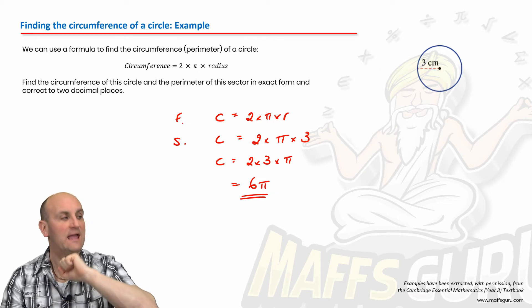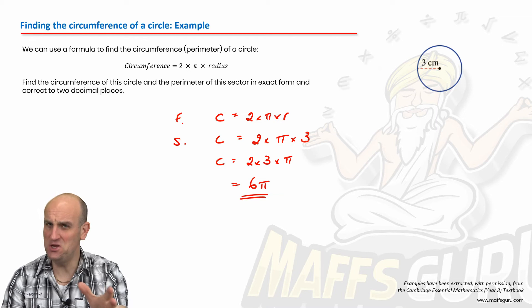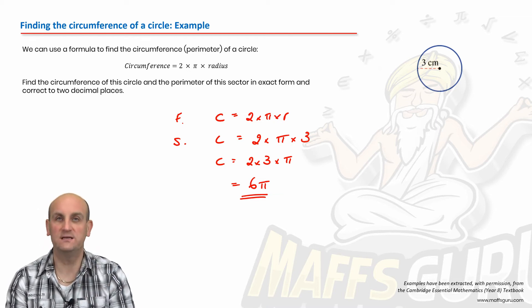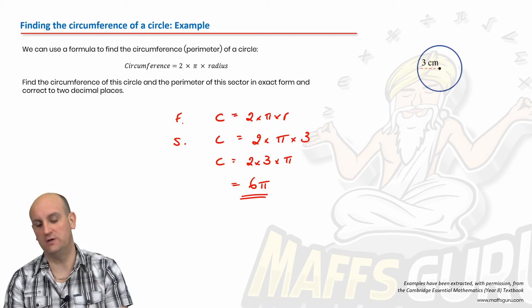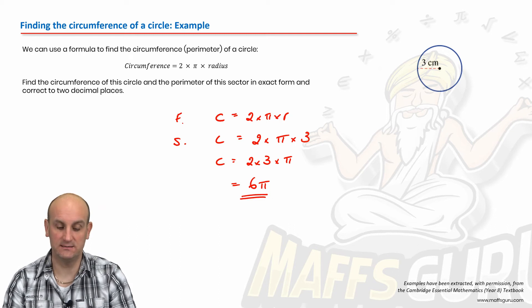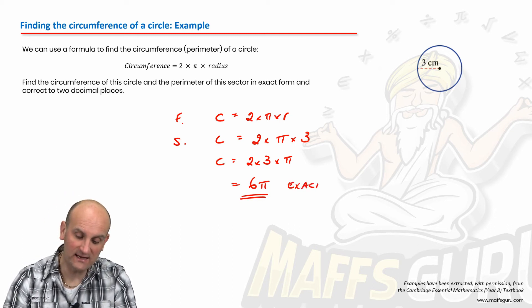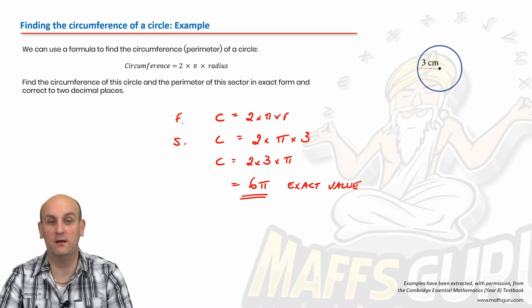Now, believe it or not, that's what we call an exact value. And an exact value doesn't have any decimals in it whatsoever. Now, because pi has decimal places to infinity and beyond. Well, basically, we're allowed to just leave the pi sign as it is. So believe it or not, as I've just said, that there is an exact value and it is a perfectly acceptable way of leaving an answer.